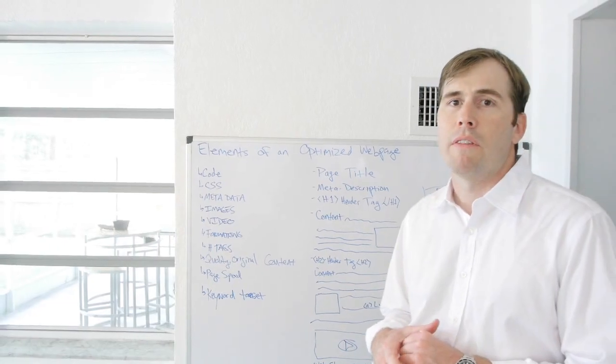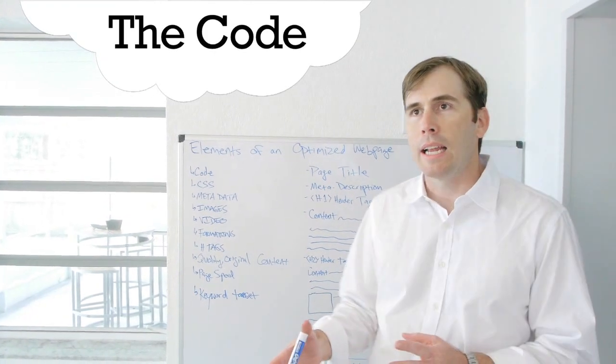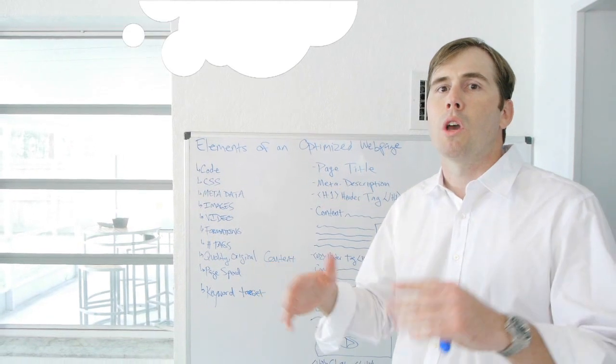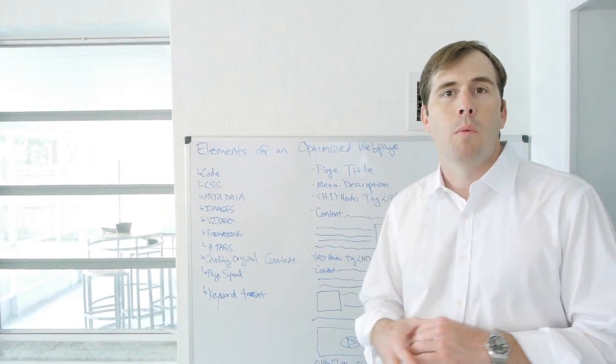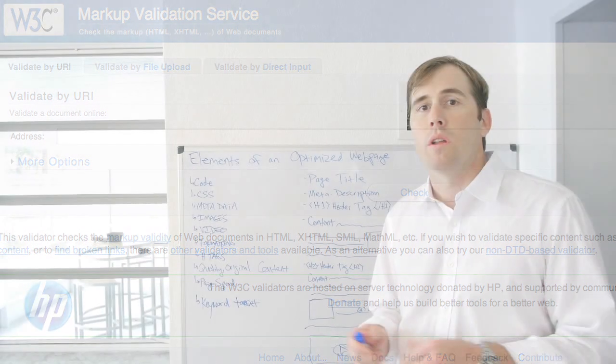One of the key ingredients of an optimized web page is the code. Is the code clean or dirty? Clean code means the search engine can go through the code easily and not get stuck. There's no errors. One good thing to do is have your website validated with the W3C validator. Make sure there's no errors in the code or the CSS.